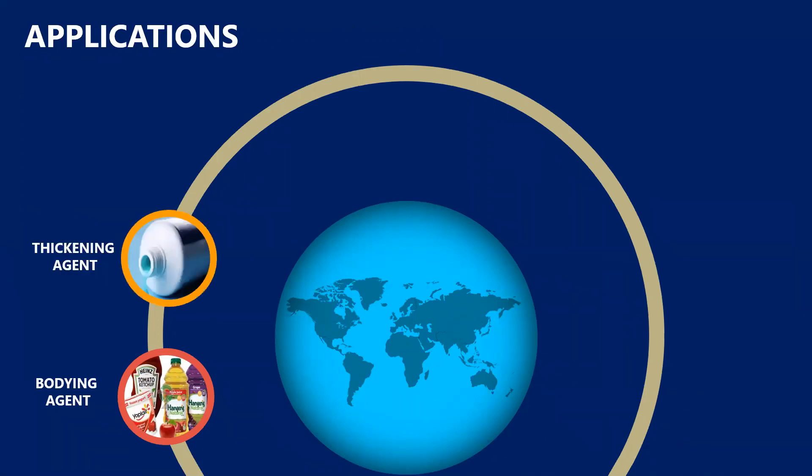It is used as a thickener in toothpaste and many other products because it is non-toxic, it is viscous, and because of its viscosity and stability in a wide range of acids and lower concentrations of salt as well as temperature. It is used in salad dressings and many other food products in order to give them that viscous nature.